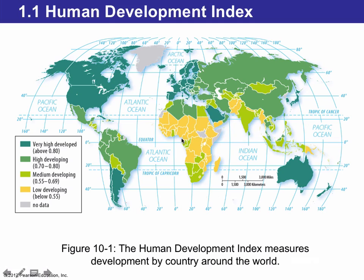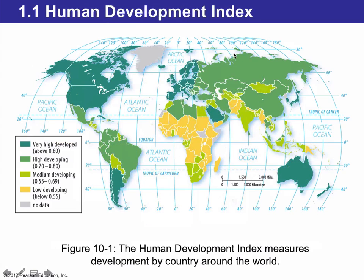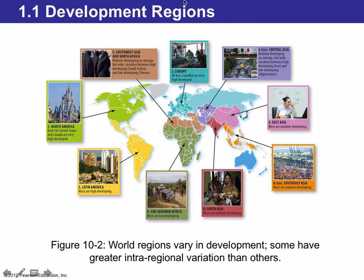Most countries in the northern hemisphere are either highly developed or very highly developed, while countries in the southern hemisphere are usually medium developed or low developing nations. Looking at world development regions, each region has indexes indicating its level of development. Within each region there are variations — for example, not all of the United States has the same levels of development; some parts are very developed and some are not.